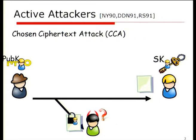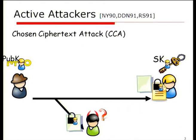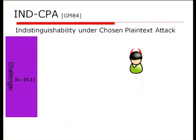However, perhaps a more robust and useful model for security is something known as chosen ciphertext security, where an attacker can actually inject messages herself and in particular might create a ciphertext, send it to Alice, have Alice decrypt it, and somehow use this answer to help her discern what's inside that other message.